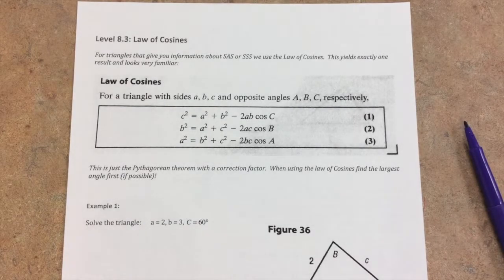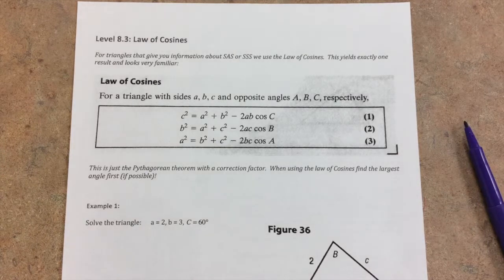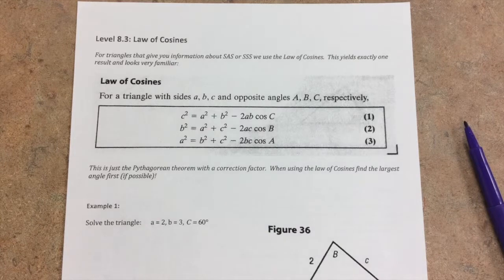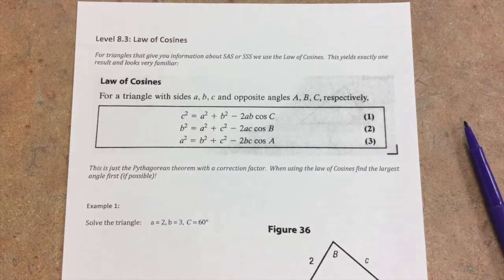Level 8.3, which is the Law of Cosines. So we are at the last stop for Level 8. There are a couple other sections in the book if you wanted to explore those, but for our sake, we're just going to drop it at right triangles, Law of Sines, then Law of Cosines.